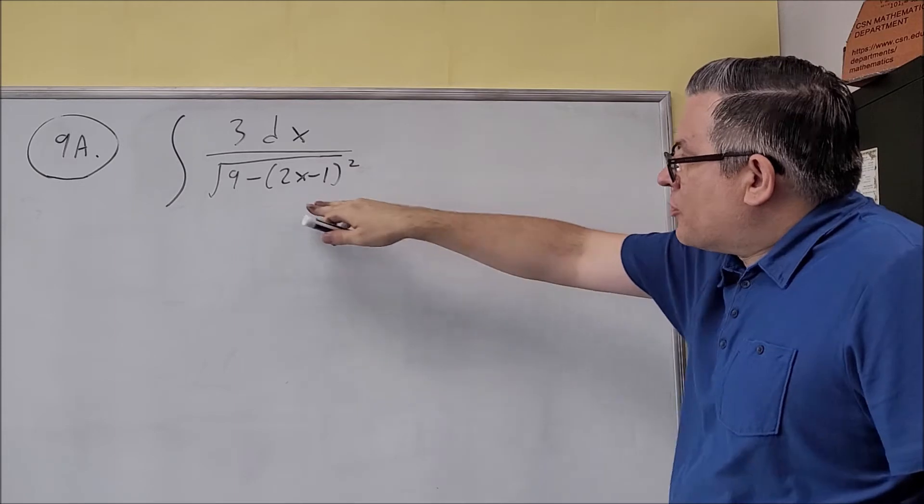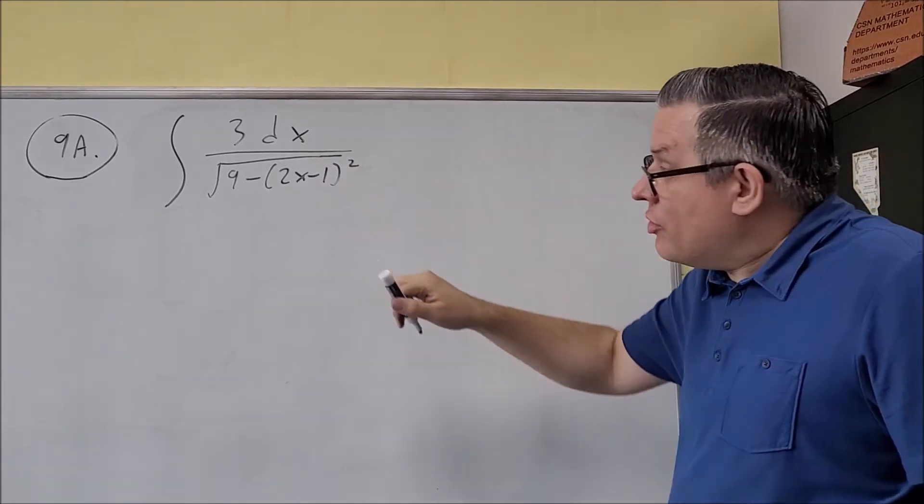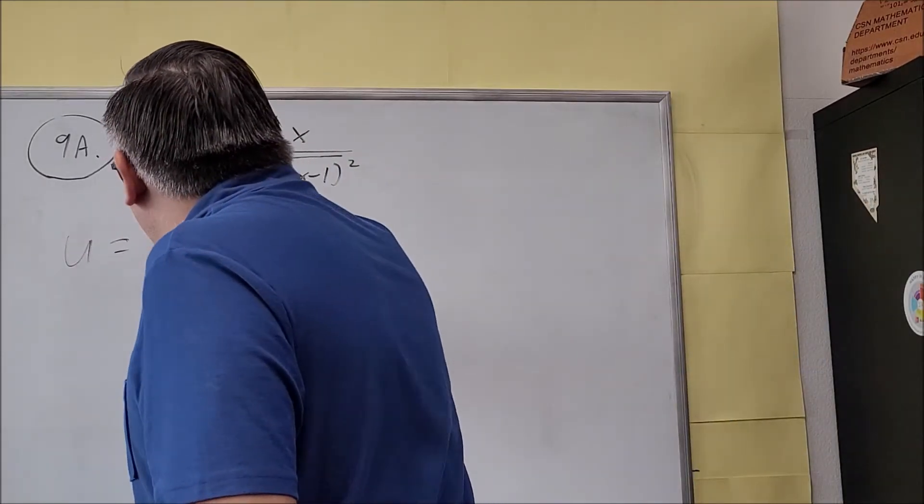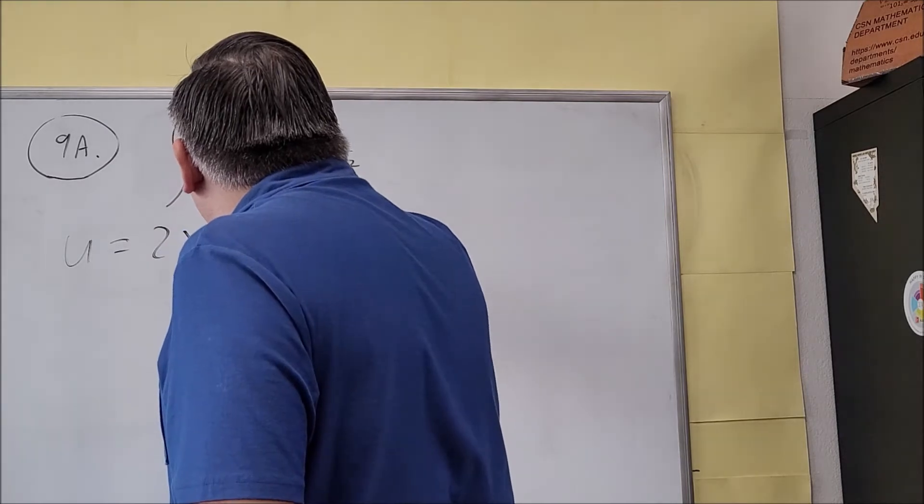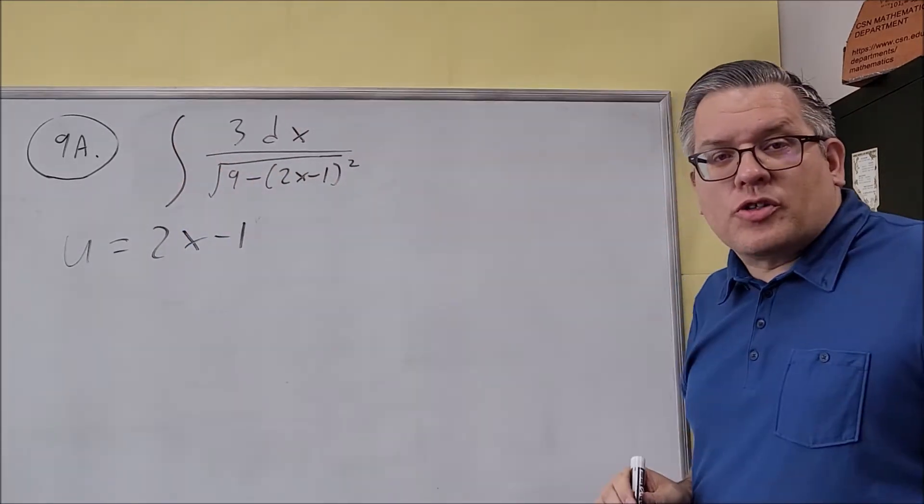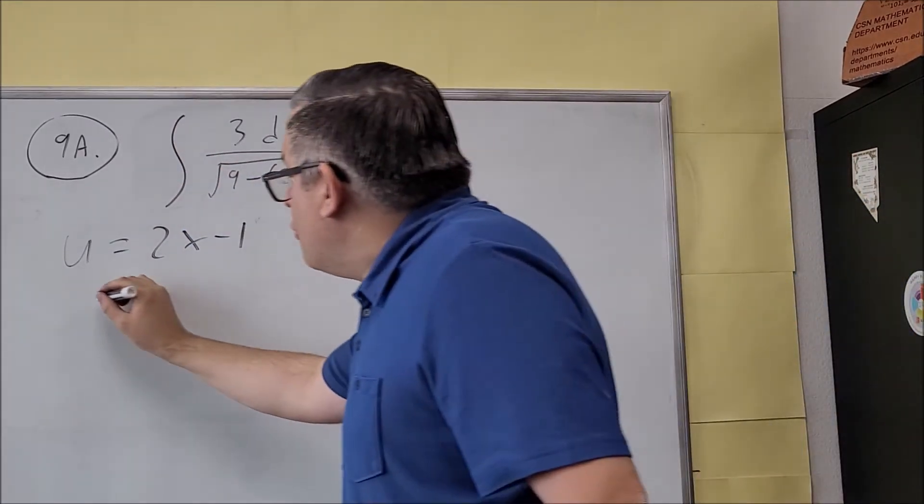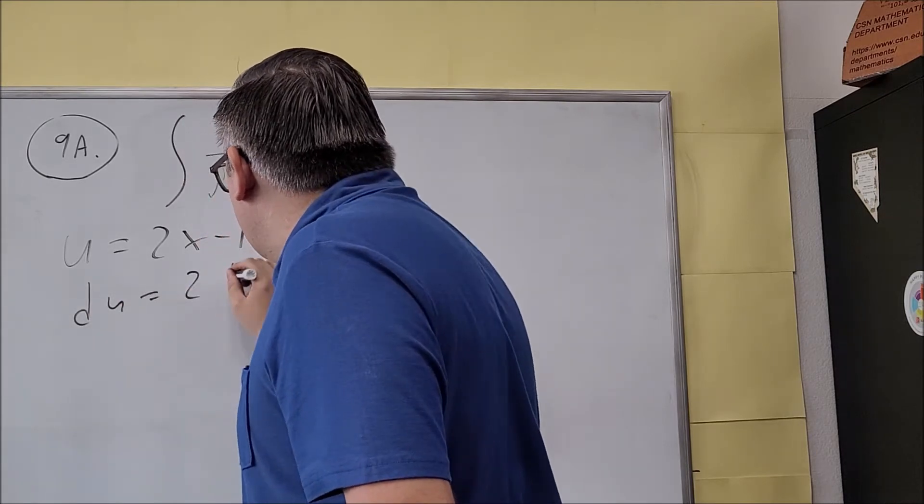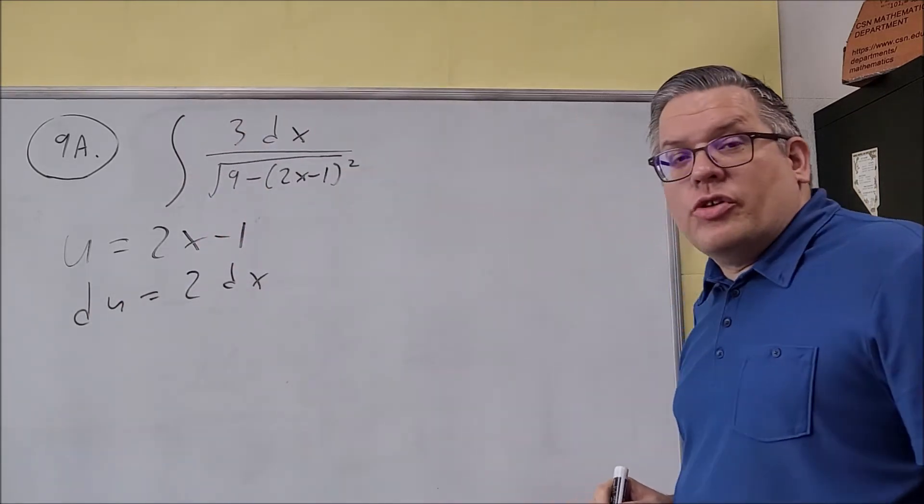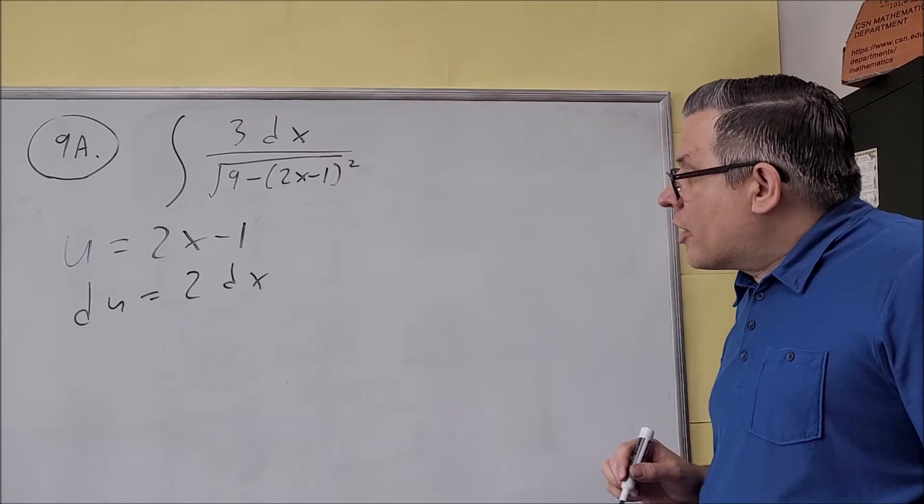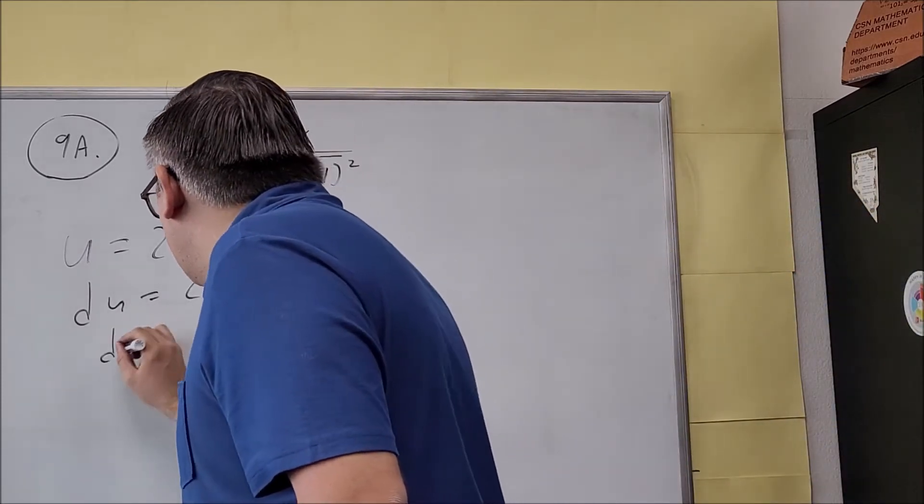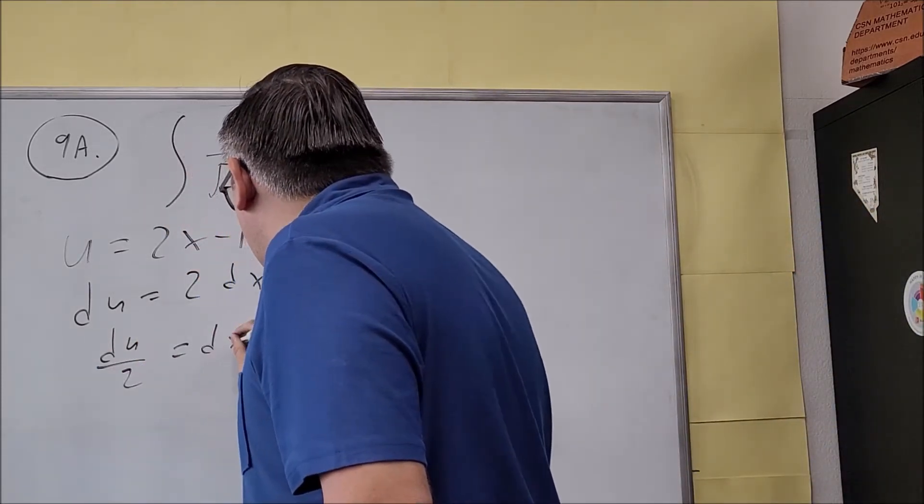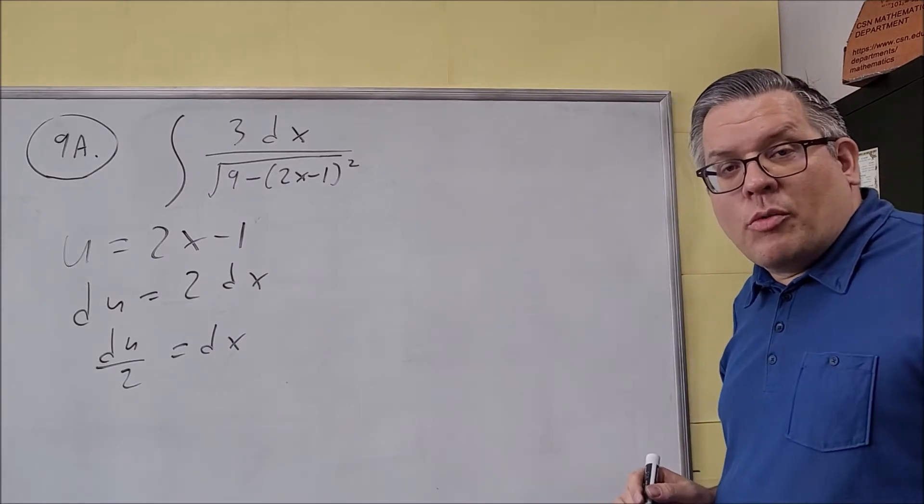So first thing we're going to do is put a u in for this. So the u, we're going to let that equal the part that's being squared. So u is equal to 2x minus 1. Do the derivative on both sides. We get 2 du equals 2 dx. You solve for dx. Then you get du over 2 equals your dx. So we're done with that one.